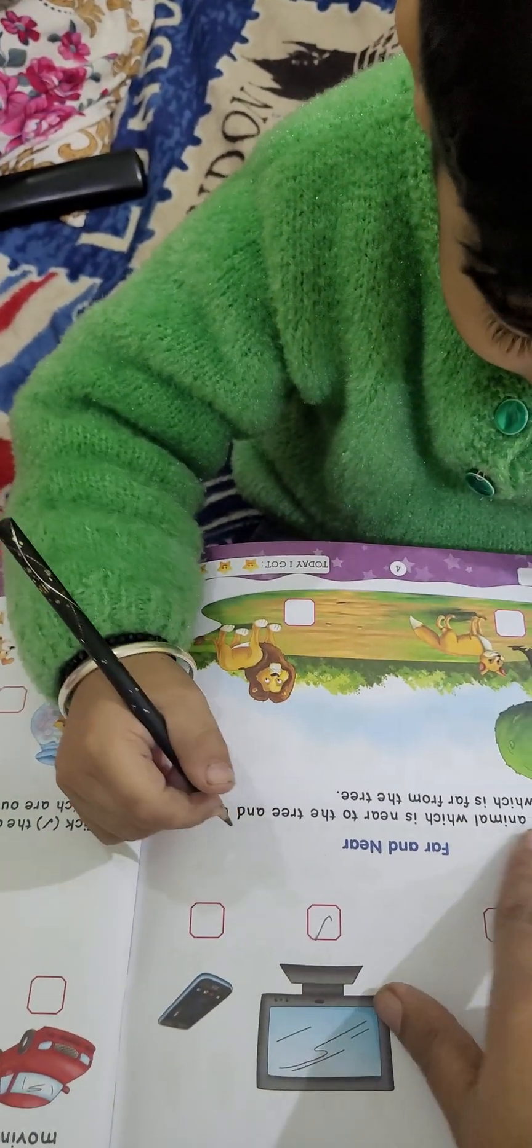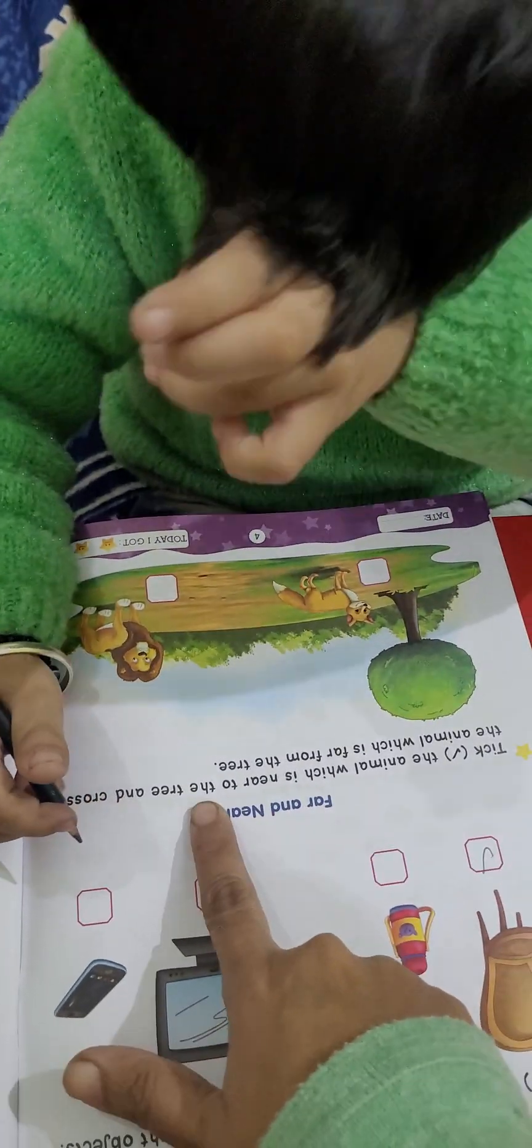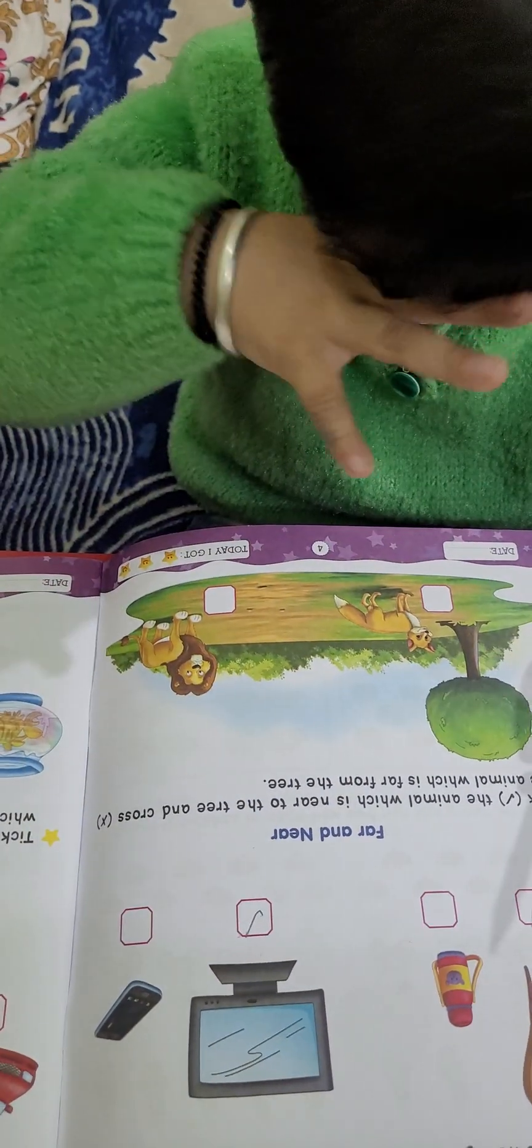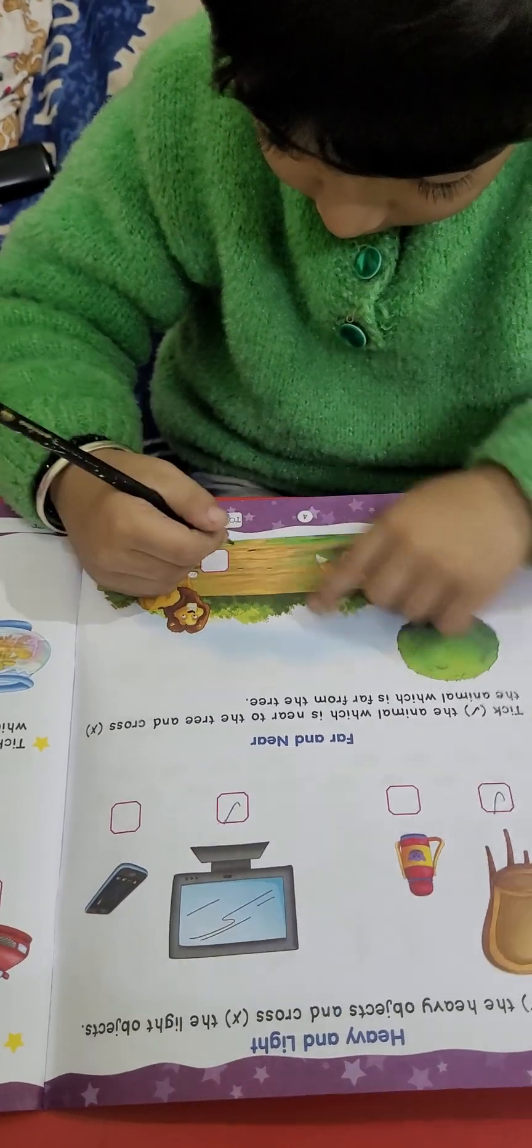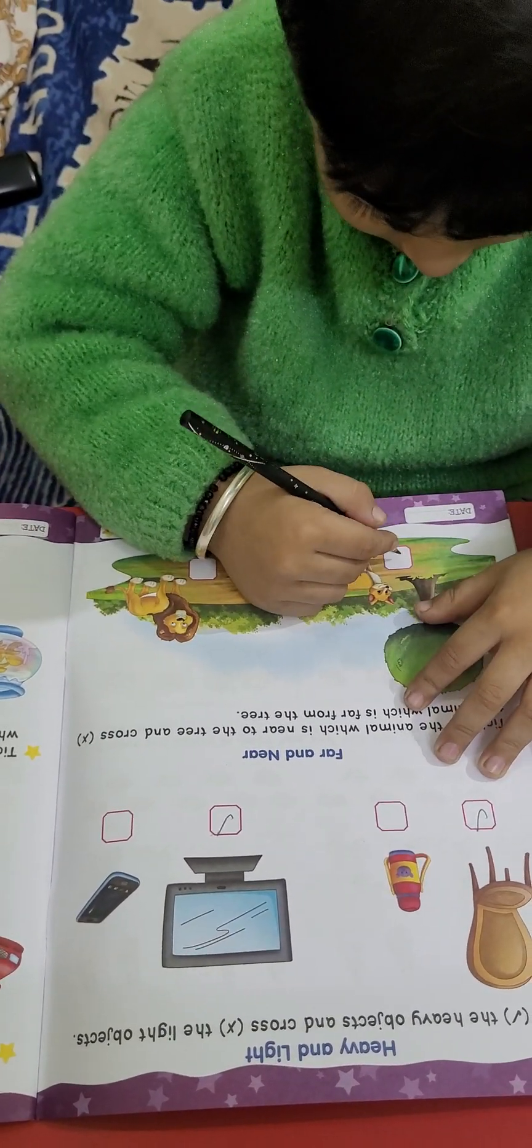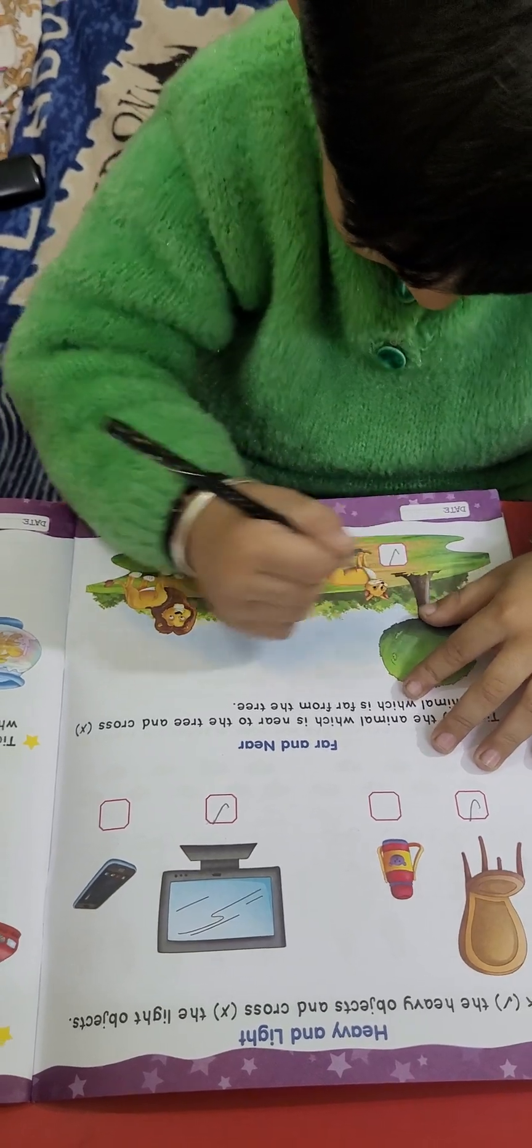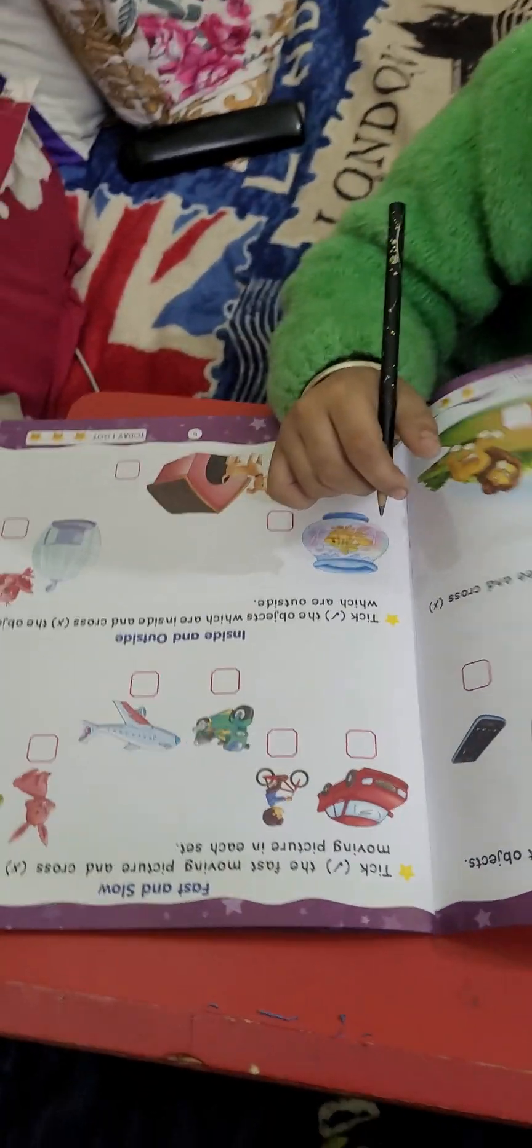Now, check here. Tick the animal which is near to the tree. Which animal is near to the tree? Tick that one. Okay. Which one is near? Near means? Pass. Very nice.